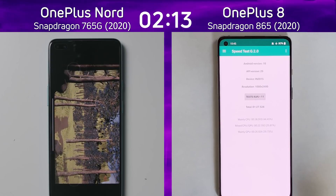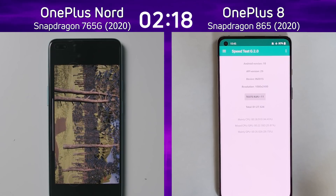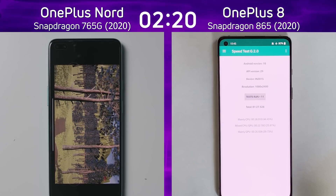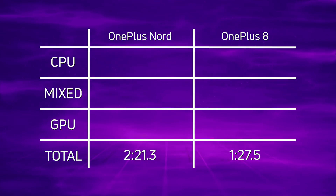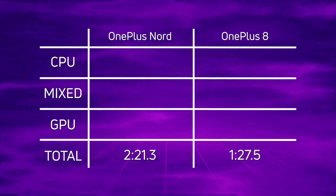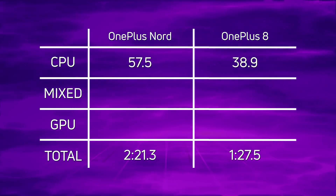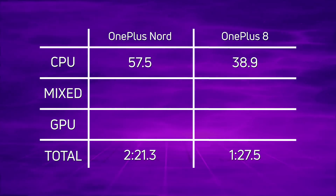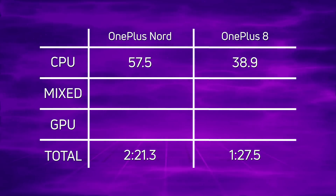The OnePlus Nord finishes the final part of the test at 2 minutes 21.3 seconds — a decisive win by the OnePlus 8. Breaking down the scores: the OnePlus 8 finished at 1 minute 27.5, with the OnePlus Nord coming in 53.8 seconds later at 2 minutes 21.3. In terms of CPU, the OnePlus Nord scored 57.5 seconds versus 38.9 for the OnePlus 8 — a win of 18.6 seconds for the OnePlus 8.